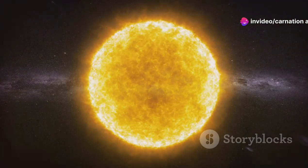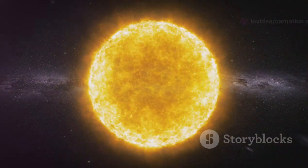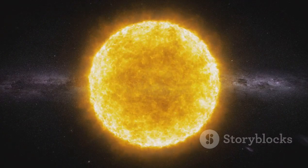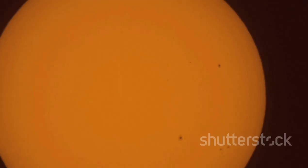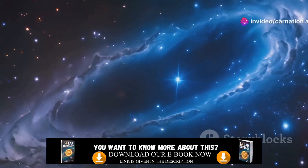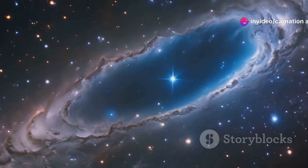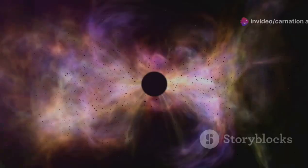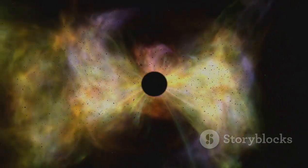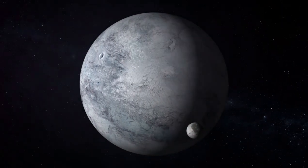This marked the birth of the sun, a massive ball of burning hydrogen that would become the heart of our solar system. But the story doesn't end here. While the sun formed at the center, the remaining material in the disk began to cool and coalesce into solid particles. Over millions of years, these particles collided and stuck together, forming larger and larger bodies.